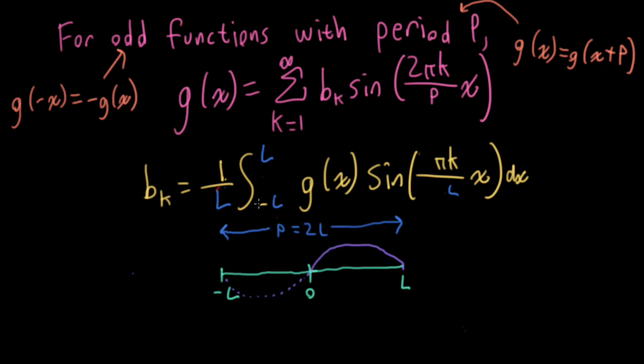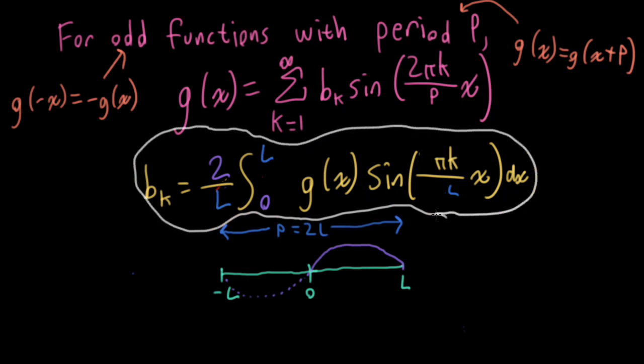So another trick that I can do here is to say, well, I can actually integrate from 0 to L and just double the integral. So I can stick a 2 up here. All right. So now I have my Fourier analysis integral formula for functions along the string from 0 to L.